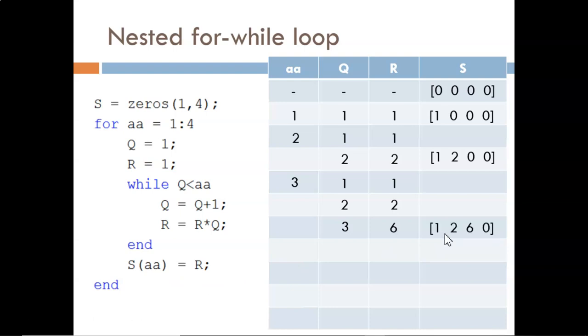We run through the whole thing one more time with AA equal to 4. Q and R are reset to 1, and then increase as shown within the while loop. Ultimately, R equals 24, and that value is assigned to the final index in S.